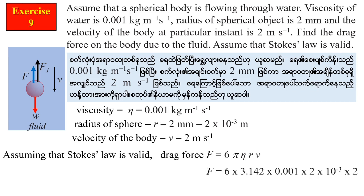So it is 3.142. The viscosity is 0.001, the radius is 2 into 10 to the power minus 3, and the terminal velocity is 2. Therefore, F is equal to 75.41 into 10 to the power minus 3.